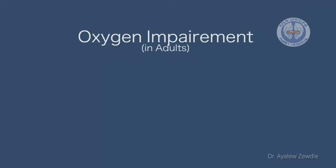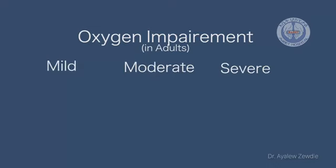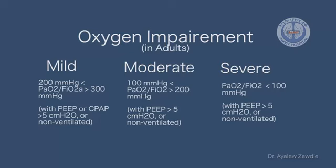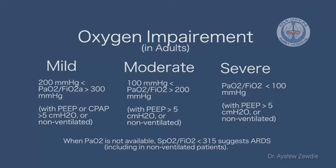Oxygen impairment in adults can be divided into mild, moderate, and severe ARDS using the PaO2/FiO2 ratio. A ratio of 200 to 300 is mild ARDS, 100 to 200 is moderate, and less than 100 is severe. When PaO2 is not available, SpO2/FiO2 can be used — if less than 150, it suggests ARDS.